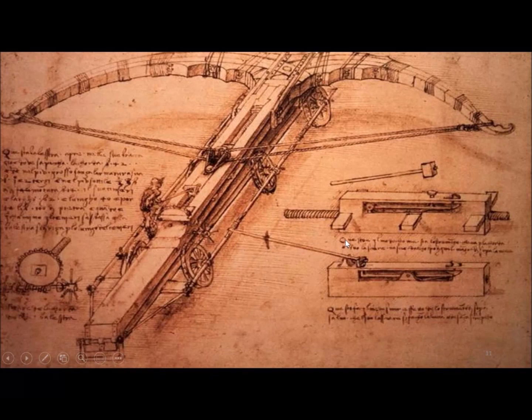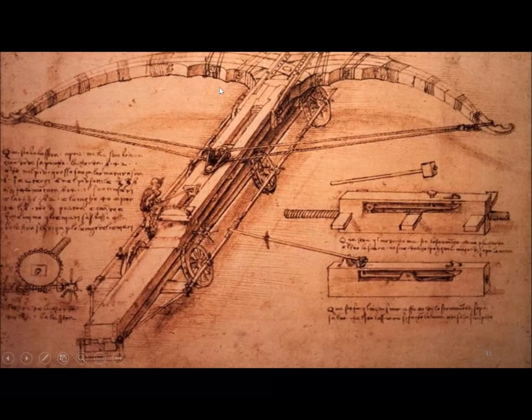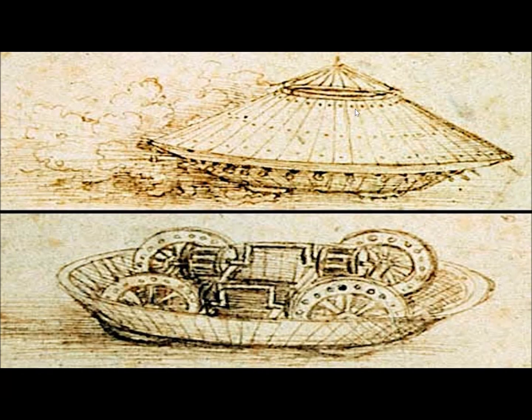Many of Leonardo's proposed inventions had to do with warfare. Here's an example of a crossbow that he wanted to build. Look at the soldier here and the size of him compared to the size of the crossbow — it's a massive weapon. He also invented what we today would call the tank: an armored vehicle that looks something like a flying saucer but would have been virtually impenetrable by enemy soldiers.